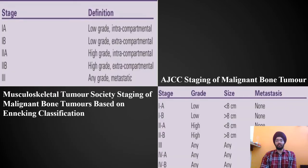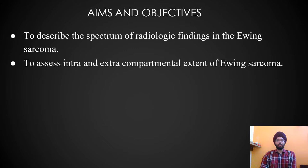Here is the AJCC staging system for malignant bone tumors and the Enneking classification. The aims and objectives of this study are to describe the spectrum of radiologic findings in Ewing sarcoma and to assess the intra- and extra-compartmental extent of the tumor.